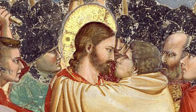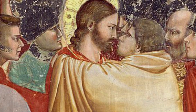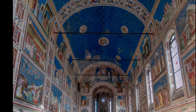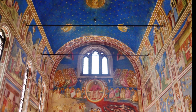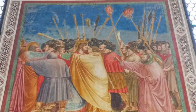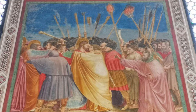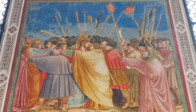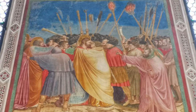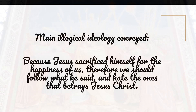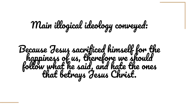Towards someone who betrayed him, Jesus still seems calm — his eyes cold and sharp, conveying disappointment toward Judas' betrayal. The background of the painting is that from 1305 to 1308, Giotto created a group of frescoes in the Scroveni Chapel of Padua, 37 pieces depicting the life of Christ, one of which is the Kiss of Judas. This is the biblical story of Judas, the traitor who betrayed Jesus; at the Passover table Jesus identified him as the betrayer, and Judas slipped away to lead enemies to arrest Jesus using a kiss as a signal. The main ideology conveyed logically is: because Jesus sacrificed himself for our happiness, we should follow what he said and hate those who betray Jesus Christ.